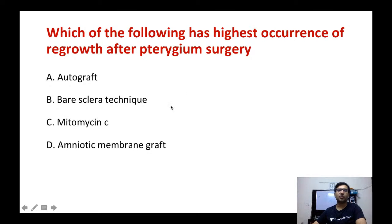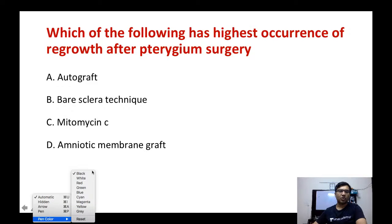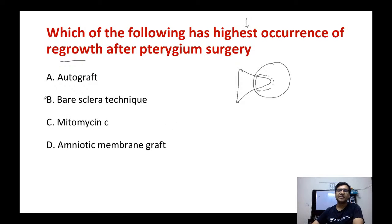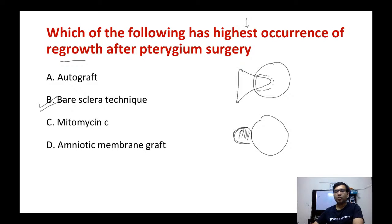Next question: which technique has the highest rate of pterygium regrowth after surgery — autograft, bare sclera, mitomycin C, or amniotic membrane graft? The highest rate of recurrence is with the bare sclera technique, where after removing the pterygium the sclera is left uncovered. To reduce recurrence, the sclera can be covered with a conjunctival autograft or mitomycin C can be applied.